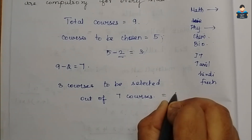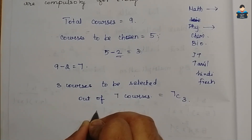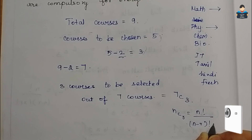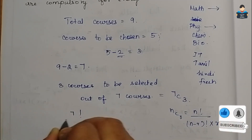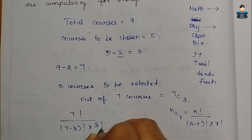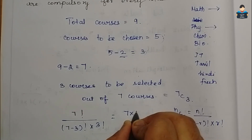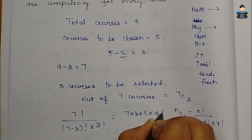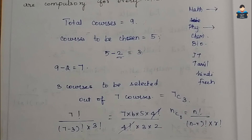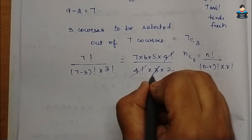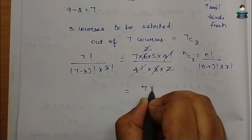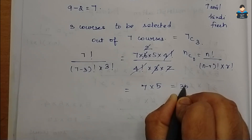So we need to select 3 courses from 7 courses, which is 7C3. Using nCr: 7 factorial by (7−3) factorial into 3 factorial = 7 into 6 into 5 into 4 factorial divided by 4 factorial into 3 into 2 into 1. The 4 factorials cancel, and simplifying gives 7 into 5 = 35 ways.